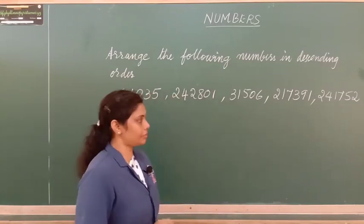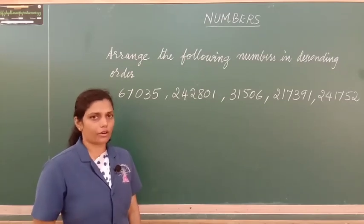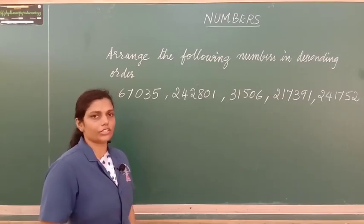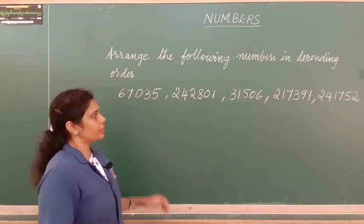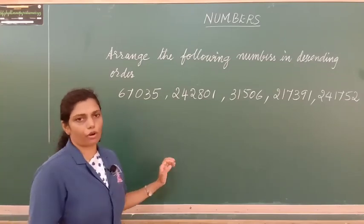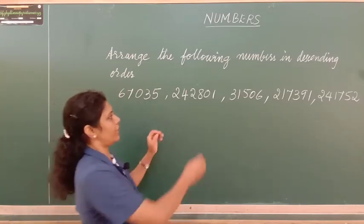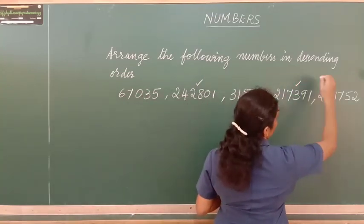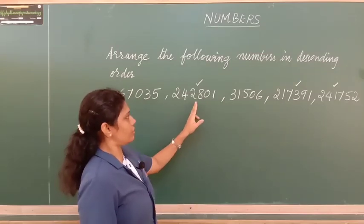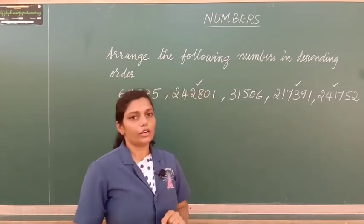Now children, arrange the following numbers in descending order — from big to small. We have some 6-digit and 5-digit numbers. We start with the 6-digit numbers: 2,42,801; 2,17,391; and 2,41,752.